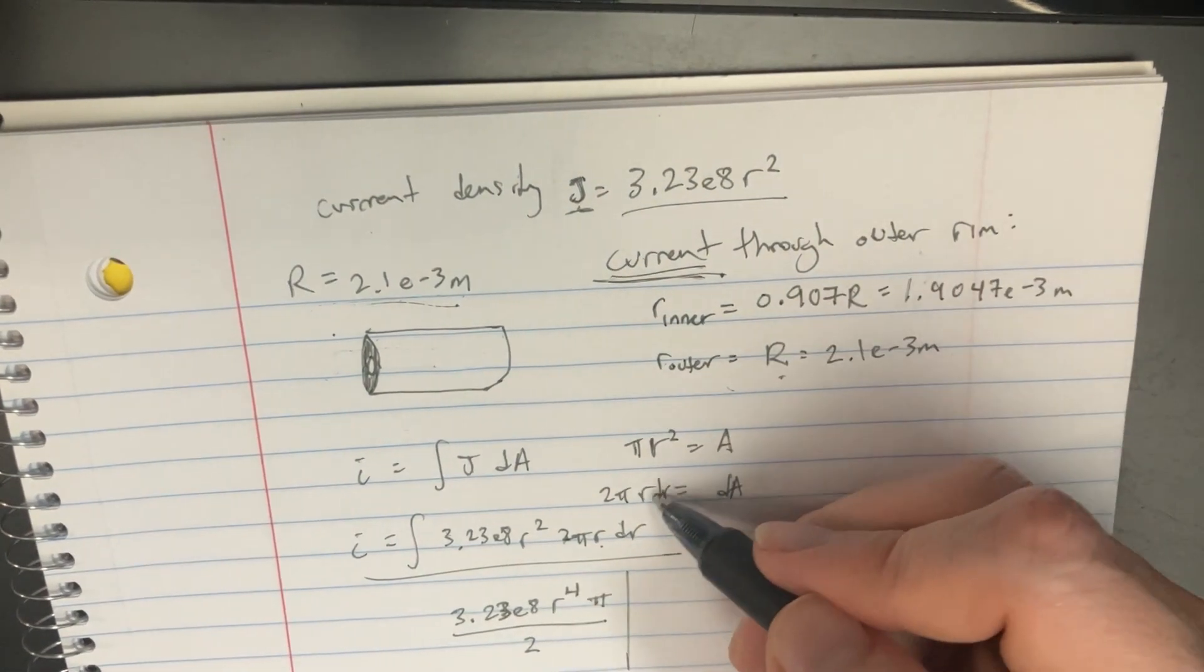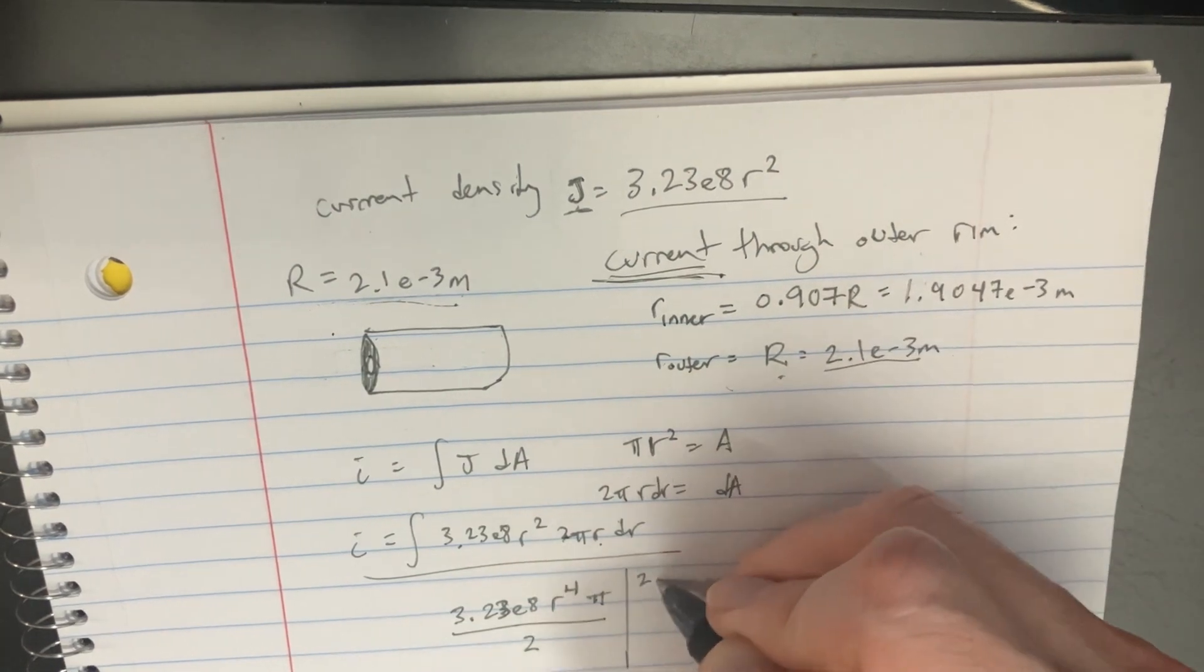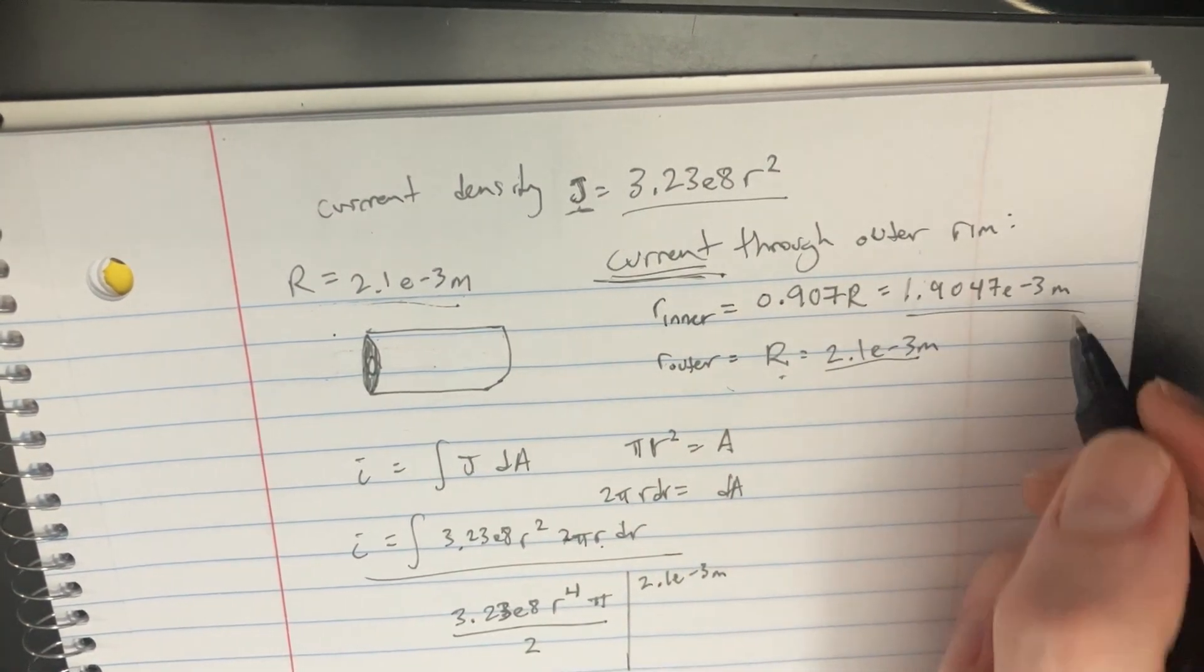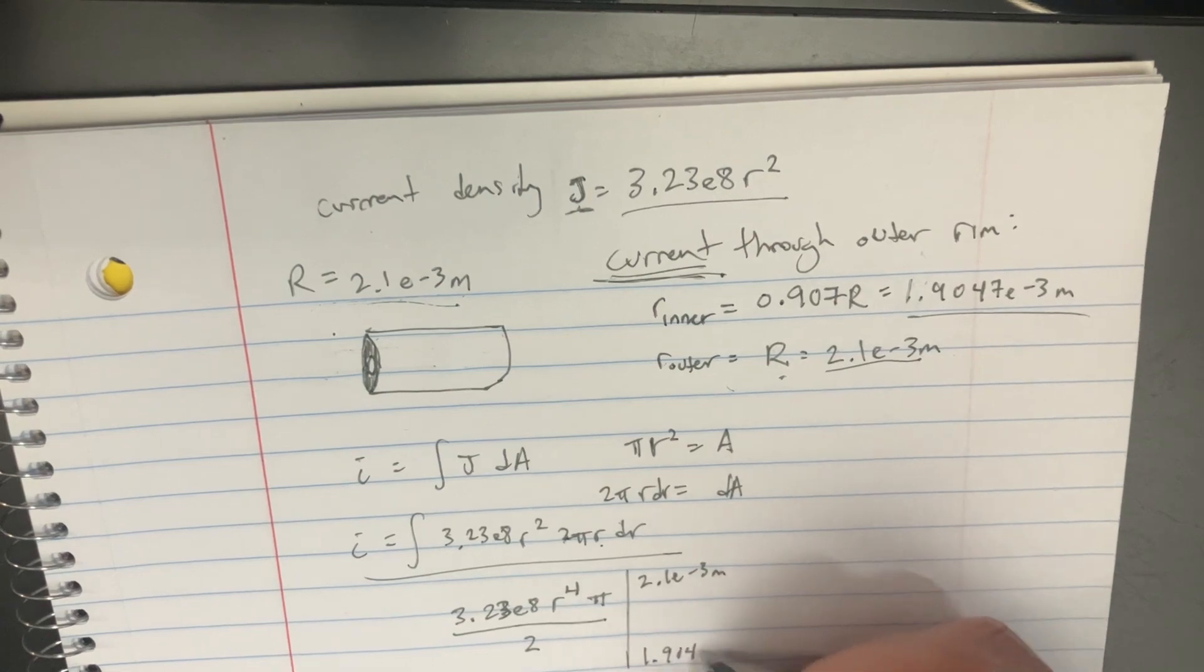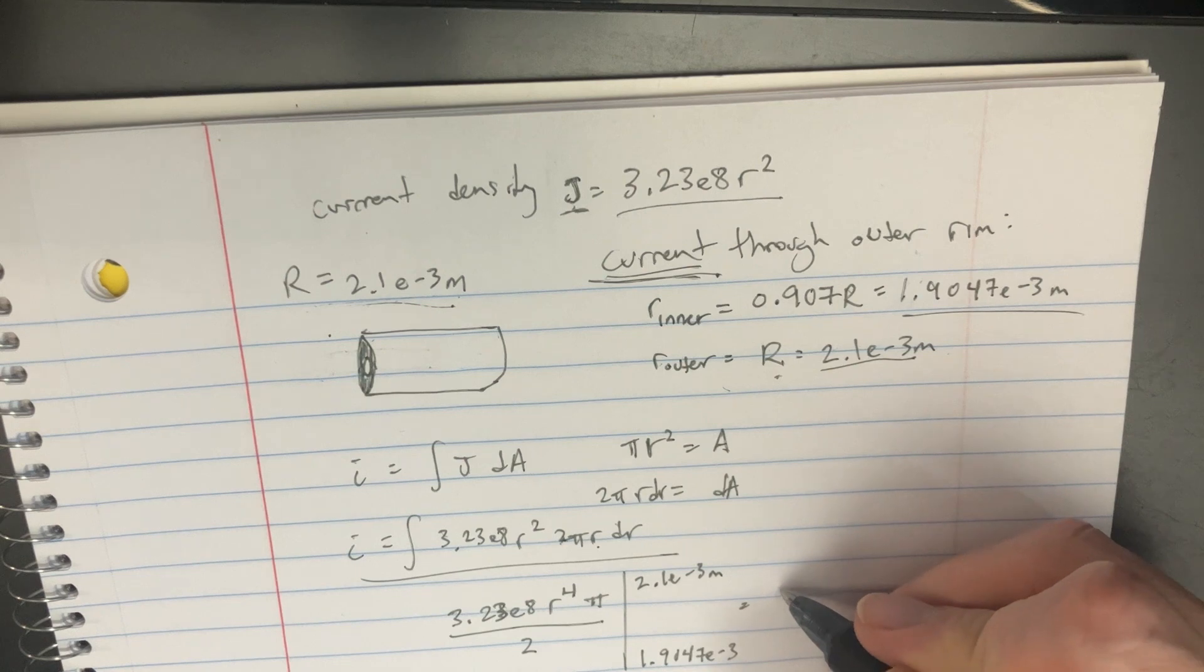We're going to integrate this from the outer radius, which is 2.1e-3, and then there's the inner radius, which is 1.9047e-3. So if we try to integrate this and finish this up...